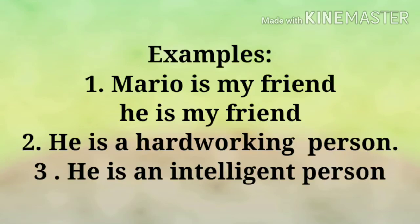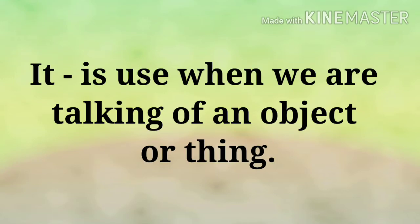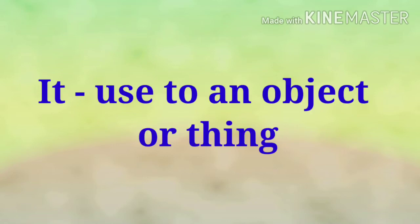For example, Mario is my friend — he is a kind friend to me, he is hard-working, he is an intelligent person. Now we use 'it' when we're talking about a thing or an object. For example, 'it is my pen.' When we're talking of an animal, a toy, an object, or a thing, we use 'it.'